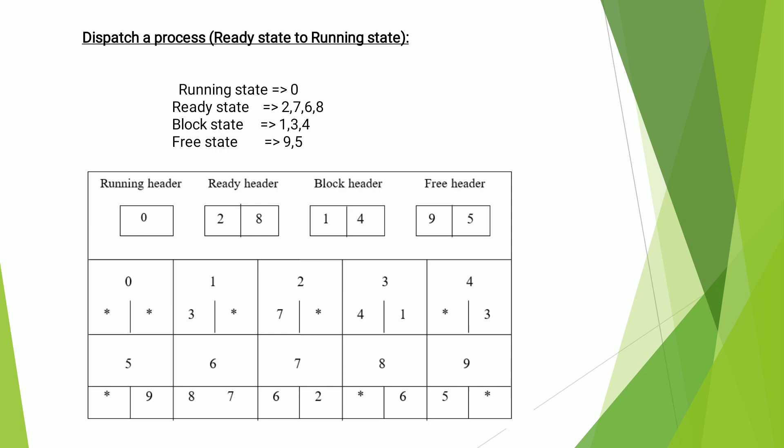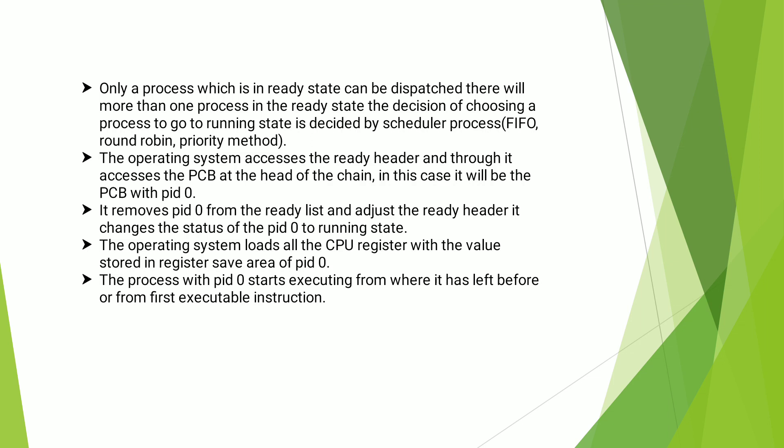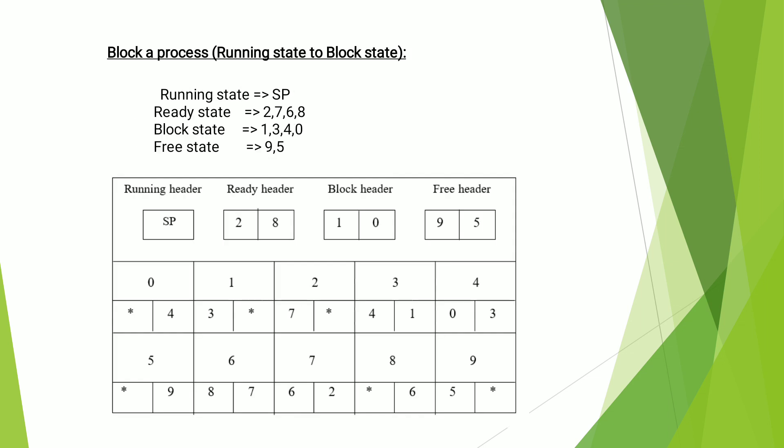After the Dispatcher Process, the next is the Blocker Process. The Blocker Process means the process which is in the running state — here consider 0 is in the running state — it should move on to the blocked state. The process involved in an IO operation is moved from running state to the blocked state. So from the running state, 0 can be moved to the blocked state. The same method will be followed to fill up the Process Control Block chain.